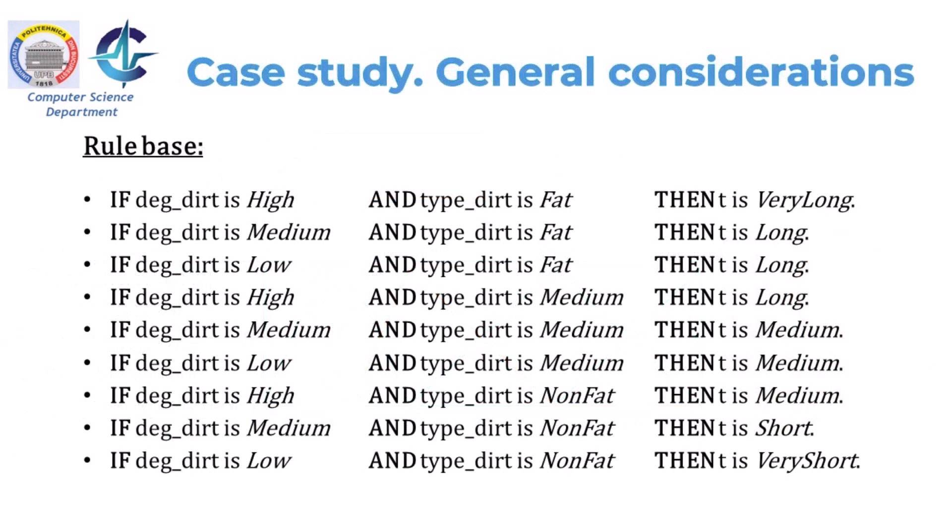Let us now define the rule base composed of nine rules. They are combinations of degree of dirtiness and type of dirtiness using the AND operator. These combinations between different degrees — high, medium, low — and FAT, non-FAT, medium FAT, produce outputs: long, very long, medium, short, and very short, which are easy to observe across the nine rules.